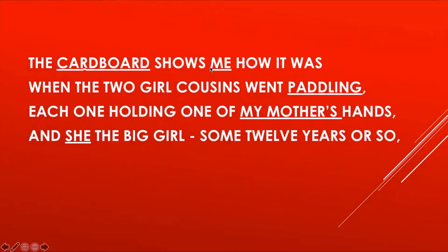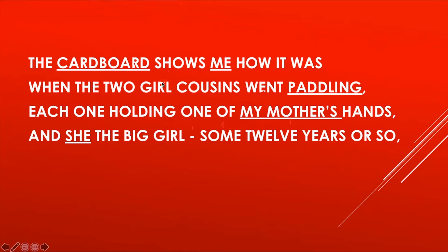'The cardboard shows me how it was when the two girl cousins went paddling, each one holding one of my mother's hands, and she the big girl, some 12 years or so.' The word 'cardboard' here means photograph. In the photograph, the poetess sees that two girl cousins went paddling with the poetess's mother. So in total there are three girls: the poetess's mother and her two girl cousins.